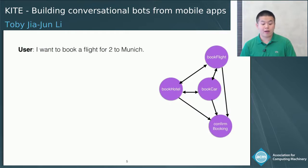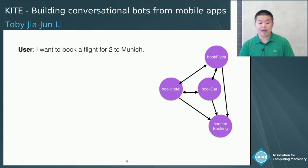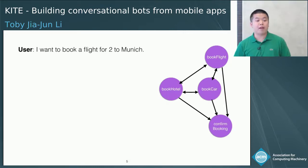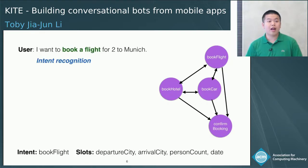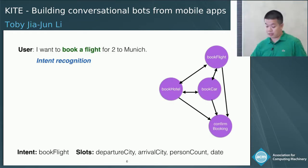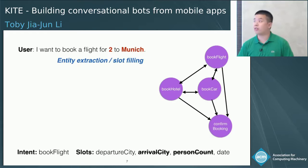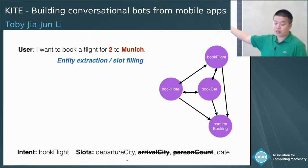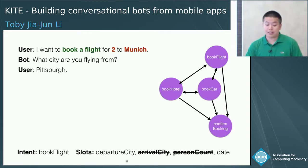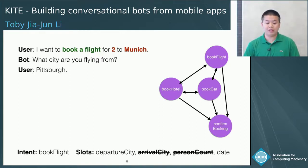Before moving forward, I want to first explain the slot-filling process using a simple travel-booking bot as an example. Suppose we have a bot whose supported intents are as follows, and the user says, 'I want to book a flight for two to Munich.' An intent recognizer will first recognize the intent as 'book flight,' which has four slots. An entity extractor can extract the arrival city and the person count from the utterance and fill them into the corresponding slots. There are two more slots — departure city and date — whose values need to be provided, so the bot will use developer-defined prompts for these two slots to ask the user questions.